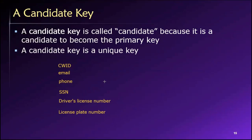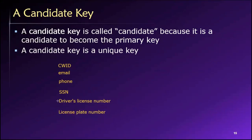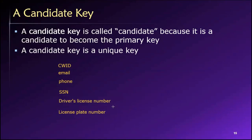Once you start to view the world through this lens, you see primary keys everywhere: license plate numbers, driver's license numbers, checking account numbers, credit card numbers. When you get an airplane ticket, you get a confirmation number — those are primary keys. They're just used to uniquely identify rows within tables. That's their purpose.